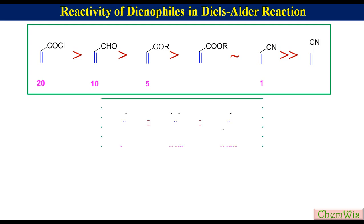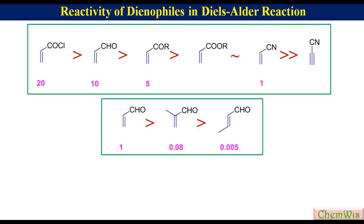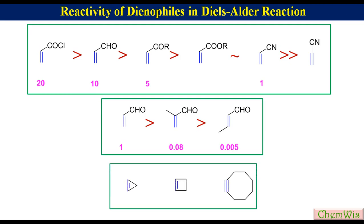This is a series of reactive unactivated dienophiles. These are reactive because there is release of ring strain after the Diels-Alder reaction. This is an example.